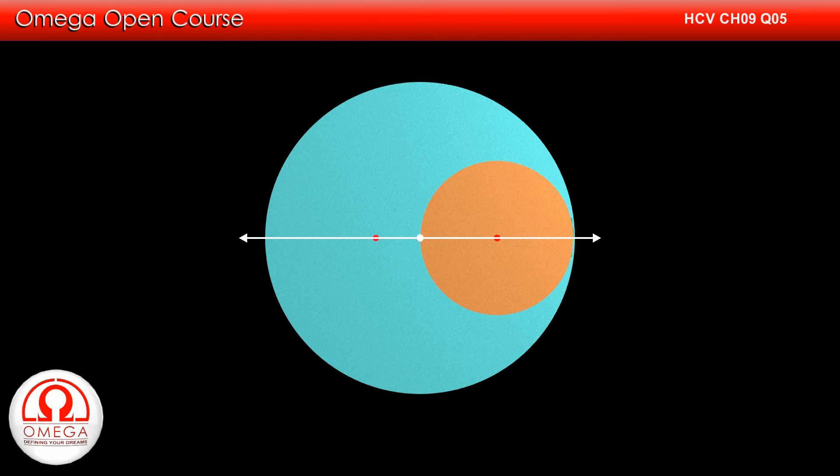Let us take the center of the larger disk as origin, horizontal line through center as x-axis and vertical line through it as y-axis. In our coordinate system, the coordinates of center of mass of the entire disk are (0,0).